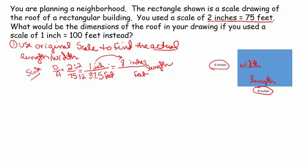I say 1 times 8 is 8, so what does that mean I need to do with the 37.5? I need to also multiply that by 8. So you multiply 37.5 by 8, and you'll come up with 300 feet for the actual length of that building. There are lots of ways to go about this, so if you did it a different way and still came up with 300 feet for the length, you're good to go.